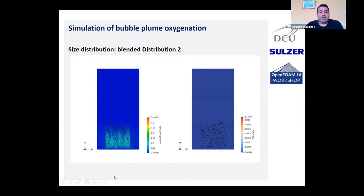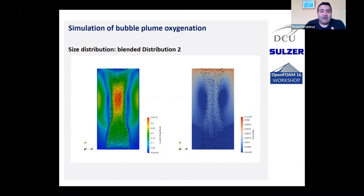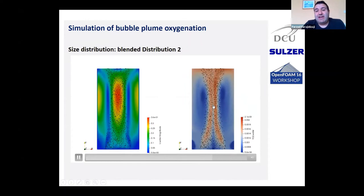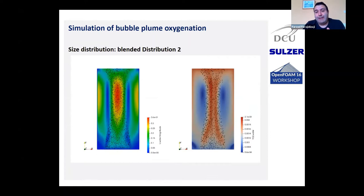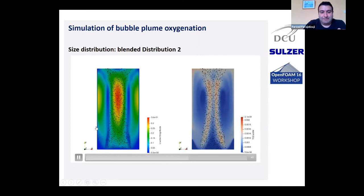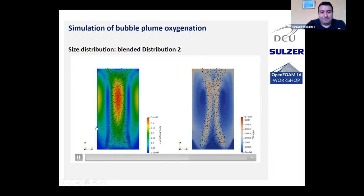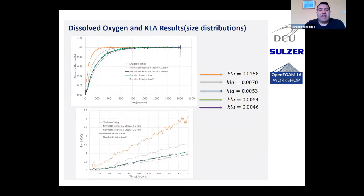Here is a sample simulation: on the left-hand side is the water velocity magnitude as the bubbles rise, and on the right-hand side is the dissolved oxygen in the water. As time passes, the dissolved oxygen increases throughout the domain as oxygen transfers from inside the bubbles to the surrounding water.